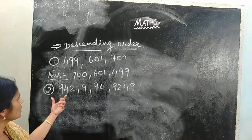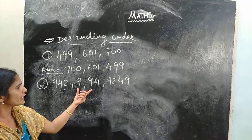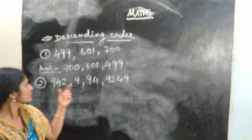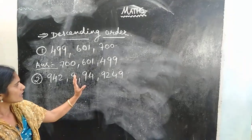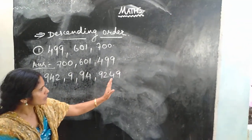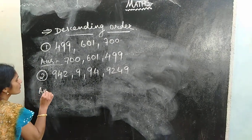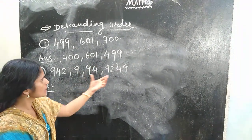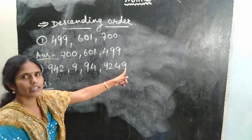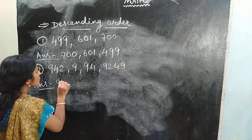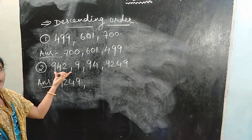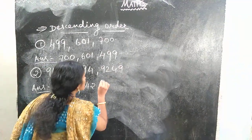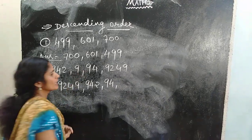Another example — some numbers are given: 942, 94 and 9,249. Here we can see different digit numbers. 942 is a 3-digit number, 9 is a 1-digit number, 94 is a 2-digit number, and 9,249 is a 4-digit number. Descending order means arrange from greater to smaller. Which is the greater number? 9,249. So first write 9,249. The next is 942, then 94, and at last we write 9.